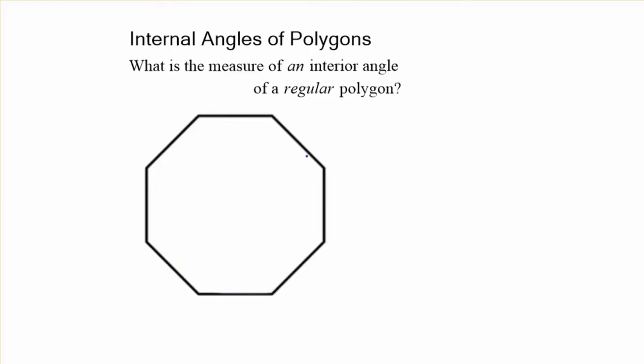Well, what about the measure of an interior angle of a regular polygon, one angle, if they're all the same? That's what regular means. All the sides and angles are the same. Well, you just take the sum of the interior angles and divide by the number of sides. And the number of sides is the same as the number of angles.